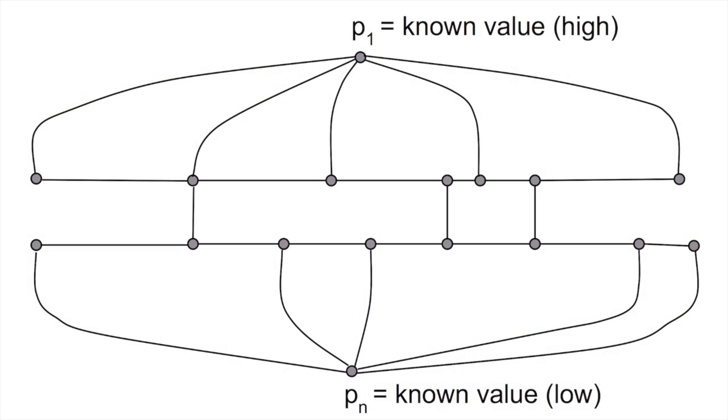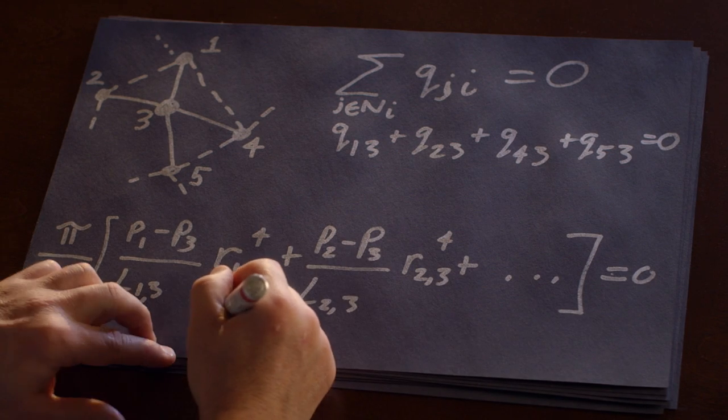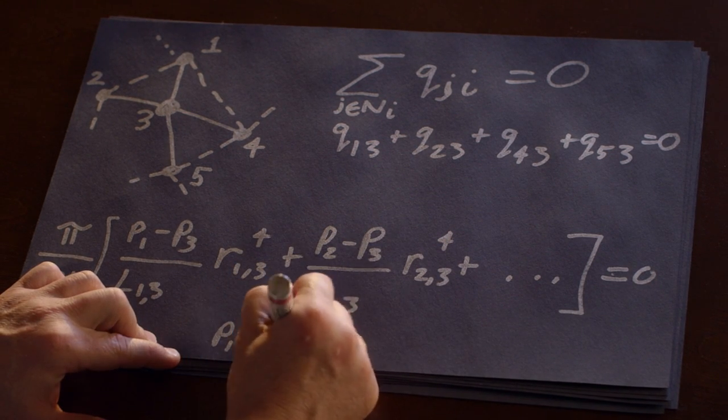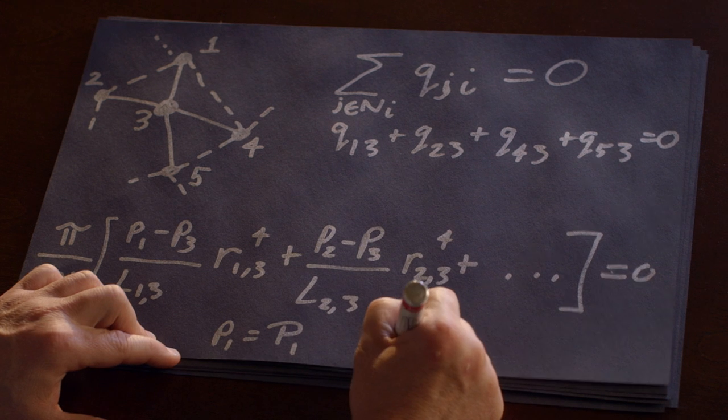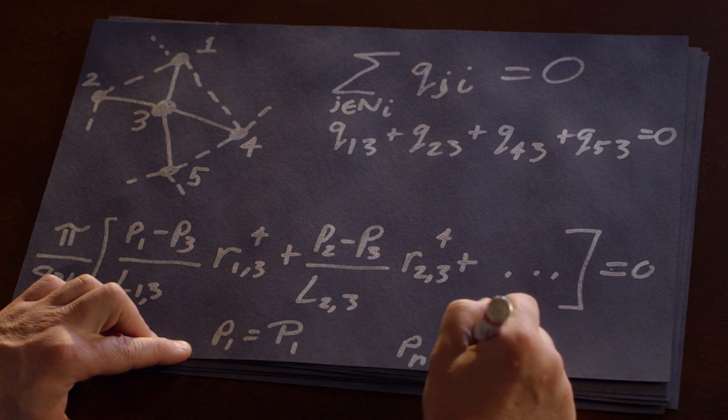The one notable exception is that you'll recall in our graph that node one and node n are the top and the bottom of the filter. So at those, we know what the pressures are. So the pressure at one is some given value, p one, and the pressure at node n is, again, another given value.